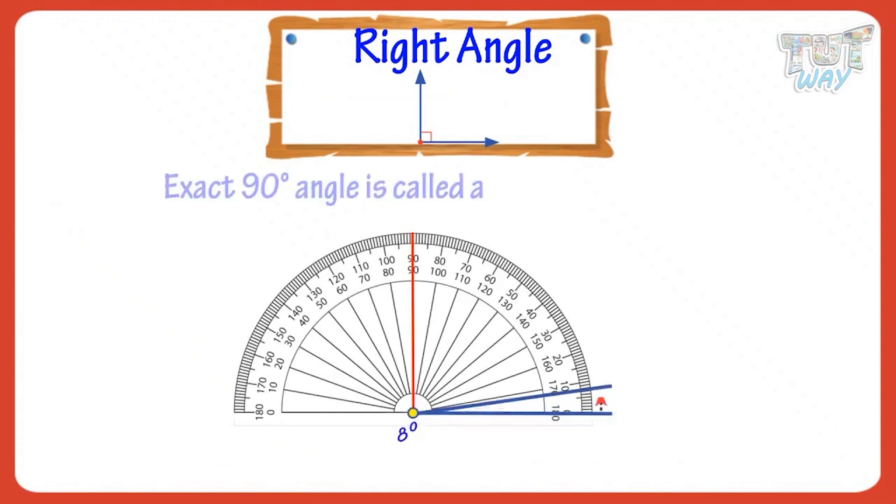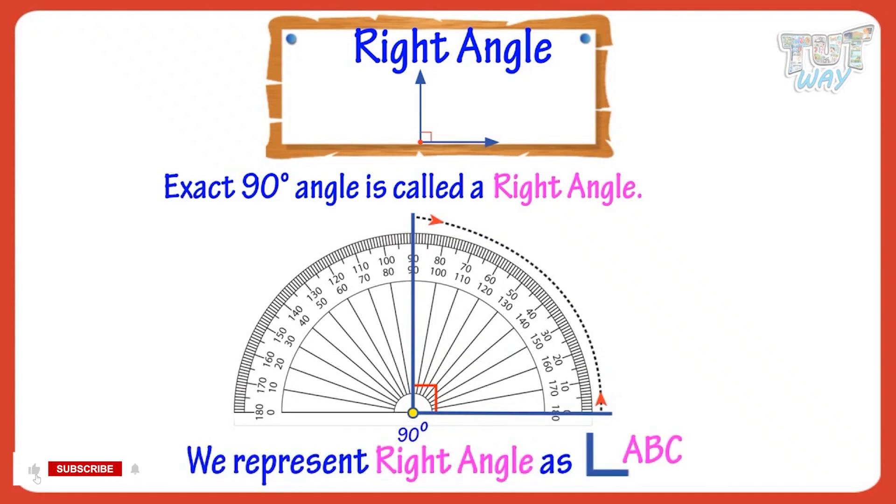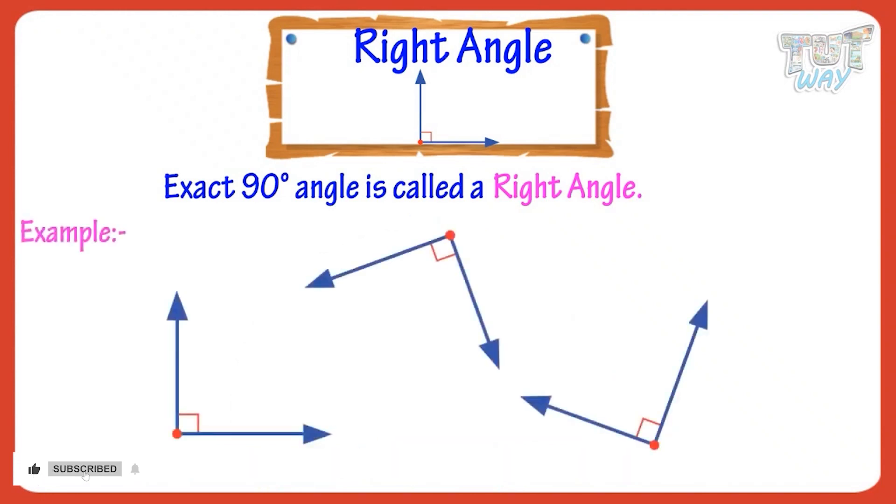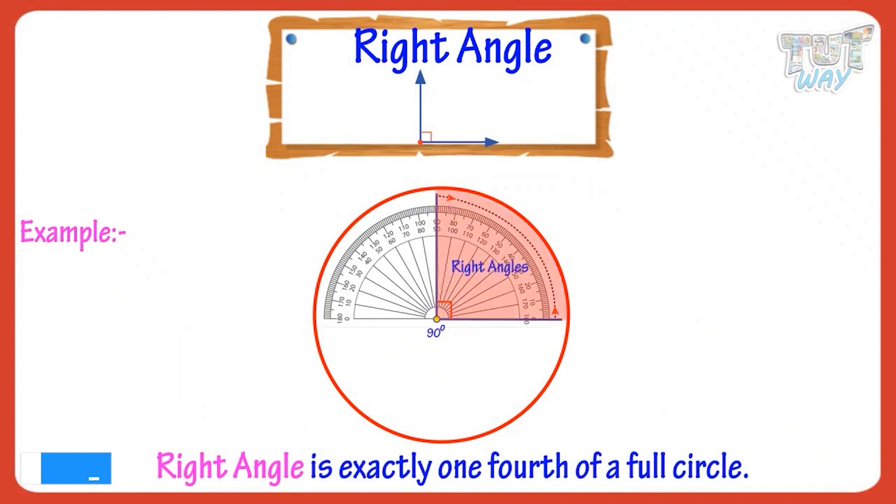Exact 90 degree angle is called a right angle. The symbol for right angle is this, so we represent right angle like this. Here are some examples of right angles. So right angle is exactly one-fourth of a full circle.